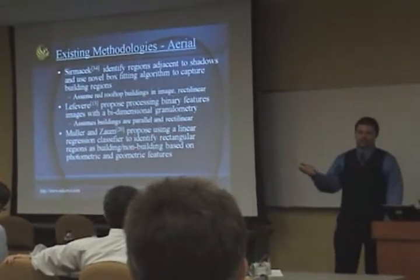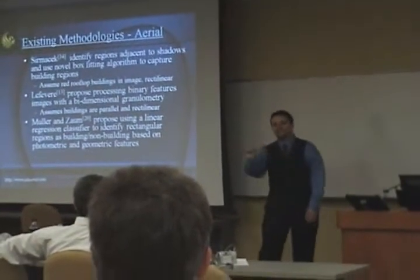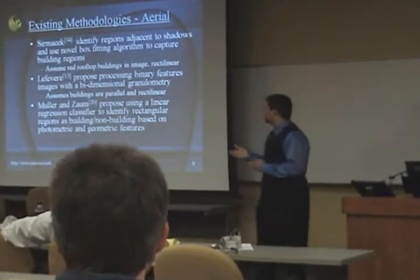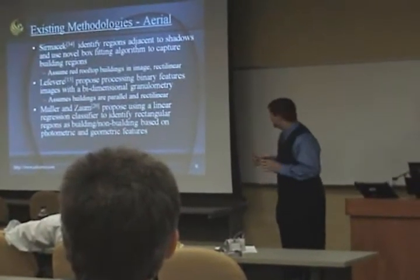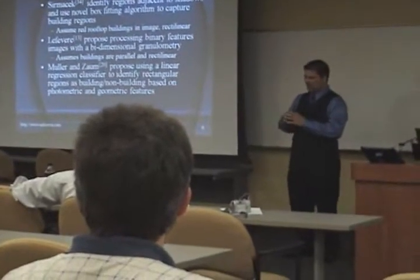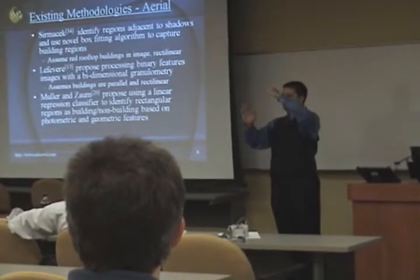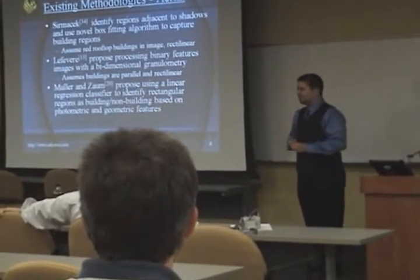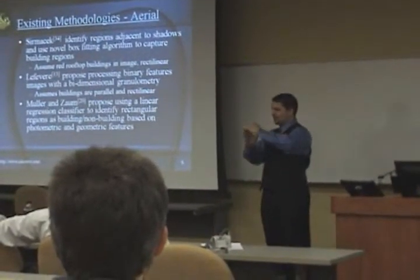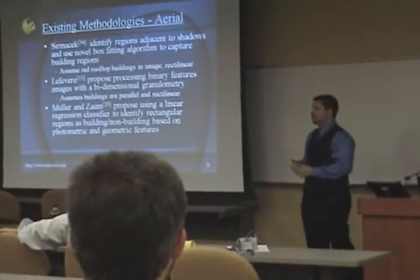Let's briefly survey existing methodologies for automatic building detection from a single aerial image — we're working with a single aerial image, not stereo pairs. Sermakaka et al. identifies regions adjacent to shadows, detects the shadows, and uses a novel box-state algorithm running a Canny edge detector, then minimizes an energy function by growing a box to meet those edges. The problem is: what happens when the building's rooftop isn't homogeneous? If it has multiple textures or colors, his expanding box will stop prematurely — typically seen with sun-side versus dark-side rooftops.